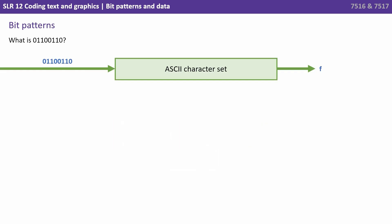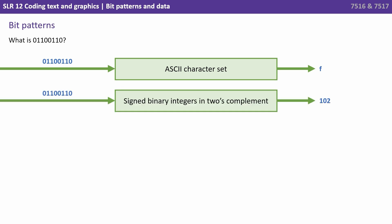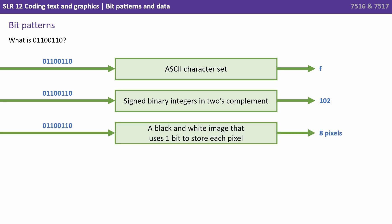If we threw that pattern of 0s and 1s through the ASCII character set, it would tell us it was representing the lower case f. If we looked at that same string of 0s and 1s using signed binary integer in 2's complement, we would say it was the number 102. A black and white image that uses 1 bit to store each pixel would give us 8 pixels of white and black from that sequence.